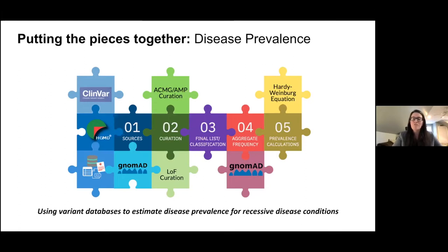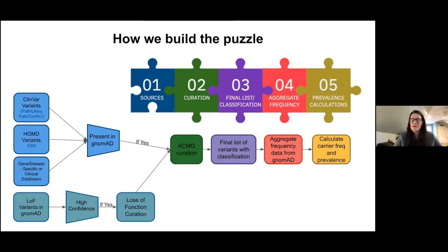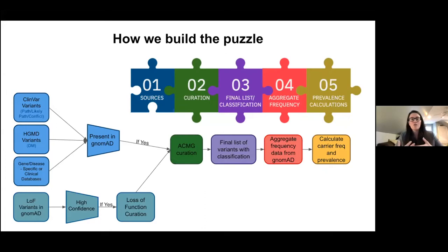This will be a whirlwind tour of this study — it normally takes about an hour to get through all the data, but I will do my best to get it together in 15 minutes. This is the project I refer to as putting the pieces together for disease prevalence. In this study, we use varying databases to estimate disease prevalence for autosomal recessive conditions. We take a different approach from the typical public health perspective — if we know the variants that are causing disease, can we use those known variants and look at population data to see how frequent or absent they are, and then use that frequency information to estimate the carrier frequency and therefore the prevalence of disease.